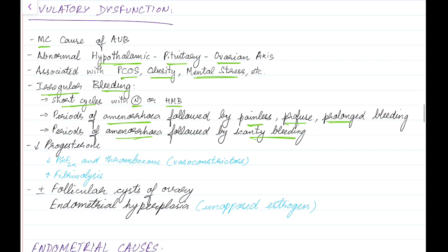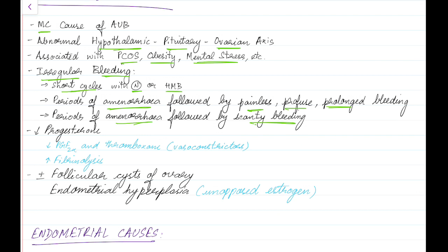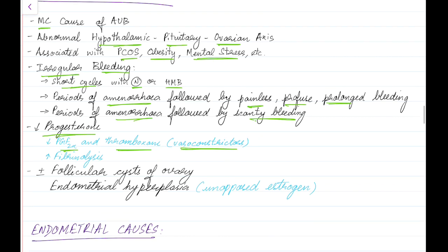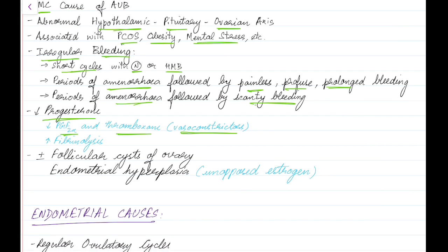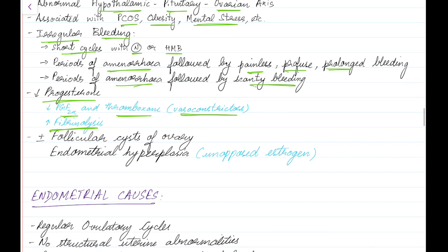What is the mechanism of abnormal uterine bleeding in ovulatory dysfunction? Due to ovulatory dysfunction there will be decreased progesterone, which causes a decrease in PGF2-alpha and thromboxane — both vasoconstrictors. Due to the decrease in vasoconstrictors there will be increased bleeding. Also, there will be increased fibrinolysis — that is, increased breakdown of fibrin — which leads to defective coagulation and abnormal bleeding.